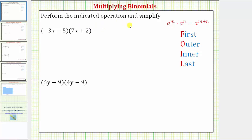We're asked to perform the indicated operation and simplify. Notice how we have the product of two binomials. To multiply two binomials, we need to find the product of each term in the first binomial with each term in the second binomial. A lot of textbooks use the acronym FOIL to explain how to multiply two binomials, but I think it's better to extend the idea of distribution rather than use this acronym.